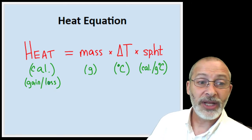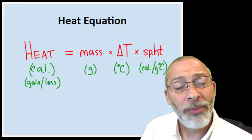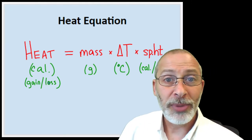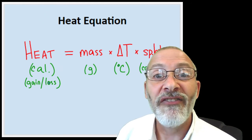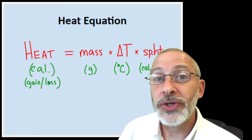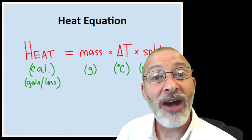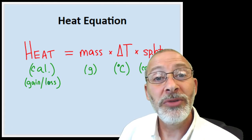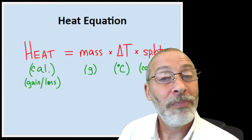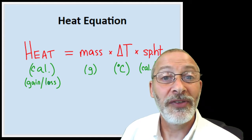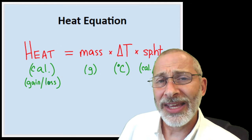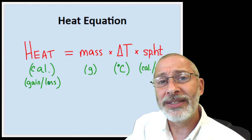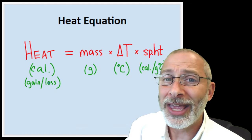Now let me quickly introduce the lab activity for tomorrow. We are going to be solving a mystery — you will be provided an unknown hunk of metal. Through following the procedures, you are going to calculate the specific heat of that hunk of metal. By knowing the specific heat of that metal, you'll be able to identify what it is, because different metals have different specific heats. Tomorrow we will be performing this lab activity together, but for now, bye-bye!